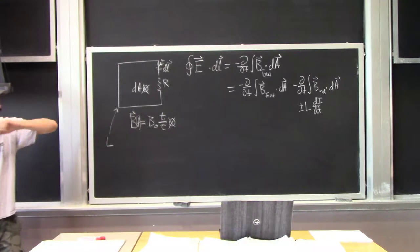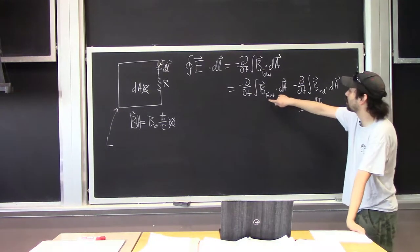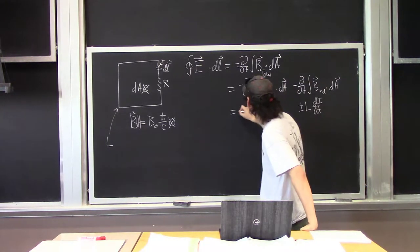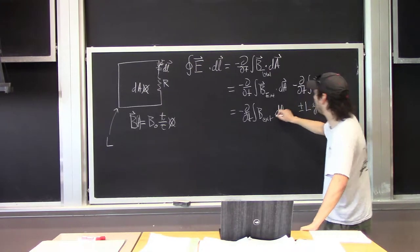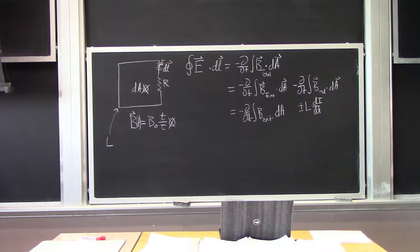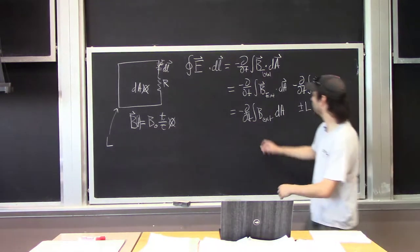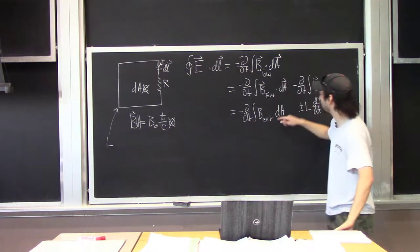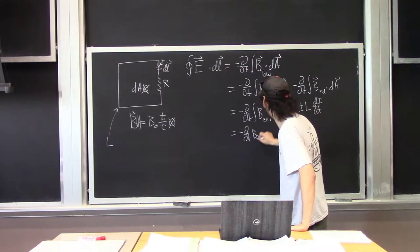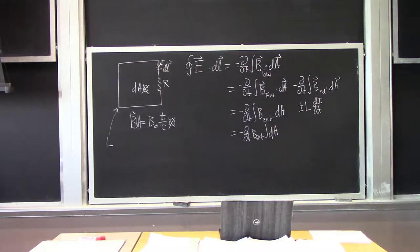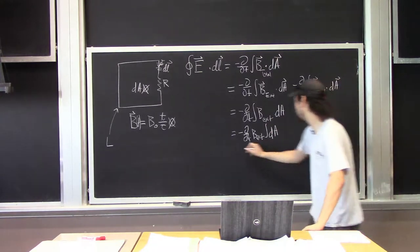What that allows us to do is evaluate this dot product because it's going to be in the same direction. So this becomes minus the partial derivative with respect to time of the integral of B_external times dA — without the dot product because these are just in the same direction. I tell you this loop has some area A, so this integral is very easy. We bring B_external outside because it doesn't vary with position, and then the integral of dA just gives us A.